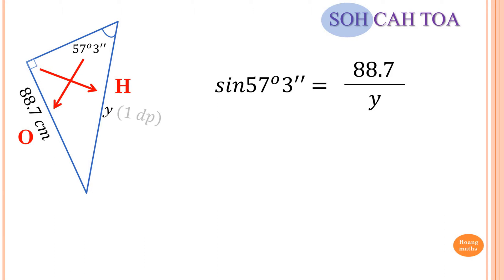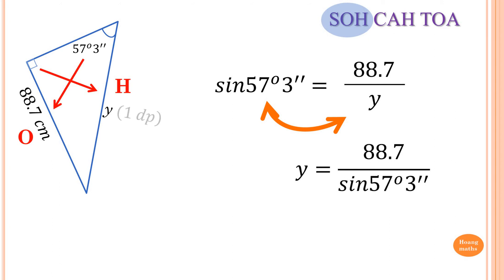Instead of doing all those steps, I'm going to use a shortcut — a memory trick. Because Y is down at the bottom, we just swap Y and the sine of 57 degrees 3 minutes. So we save ourselves a step. You just swap between Y and the sine side, like that.